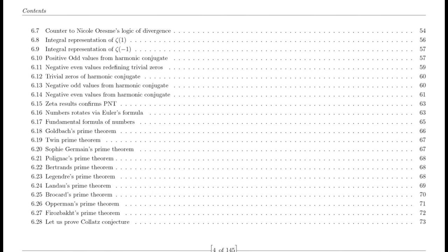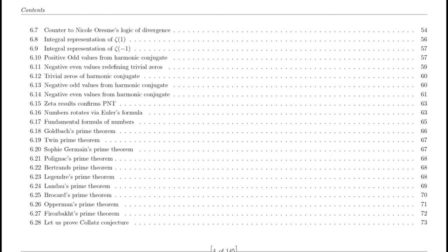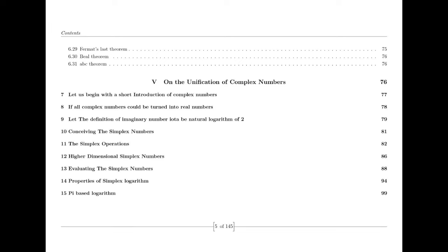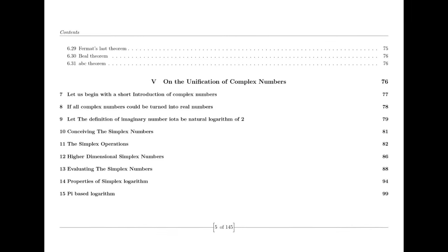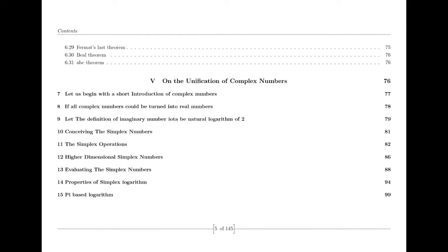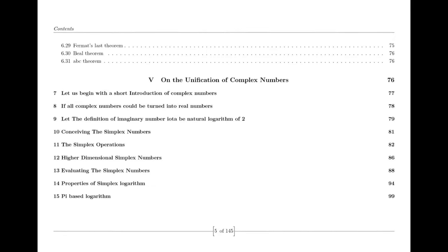To broaden the domain of the Riemann zeta function, we generally employ a technique known as analytic continuation. Analytic continuation enables us to extend the definition of a function to a larger domain. In the case of the zeta function, we can extend it to the entire complex plane, excluding the point s equals 1, where it possesses a simple pole.